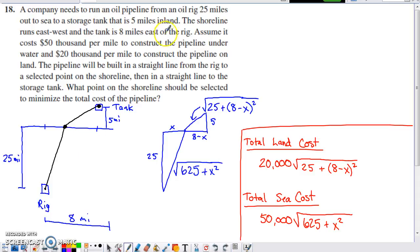If you read the problem statement here, it tells us that the rig is 25 miles out in the water, and the tank is 5 miles inland. The shoreline runs east-west, so here's my shoreline, and the tank is 8 miles to the east of the rig. That's why I have the 8 down there.